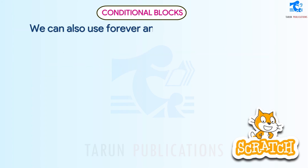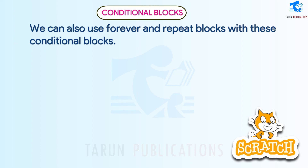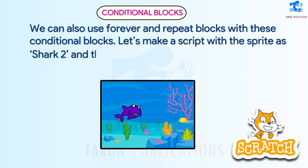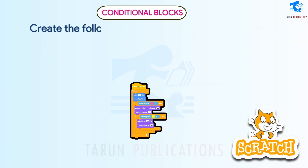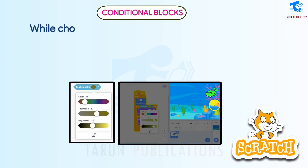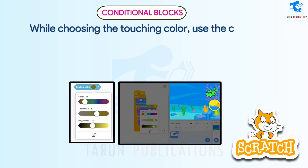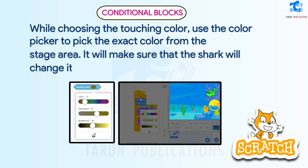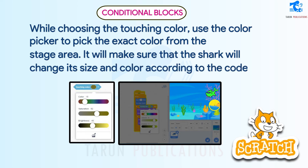We can also use forever and repeat blocks with these conditional blocks. Let's make a script with a sprite as Shark 2 and a backdrop as Underwater 1. While choosing the touching color, use the color picker to pick the exact color from the stage area so that the shark will change its size and color according to the code.